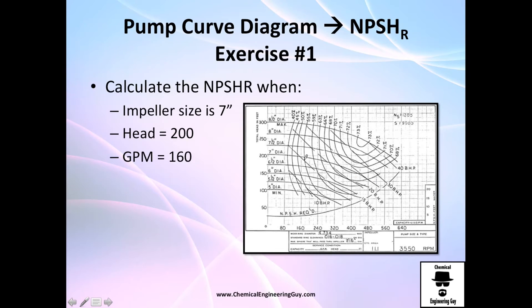We choose first the NPSH R and find out what is the volumetric flow rate. Exercise number one: calculate NPSH R when we have seven inch diameter. The operation line, the head is 200, it's very high, and the gallons per minute is 160.